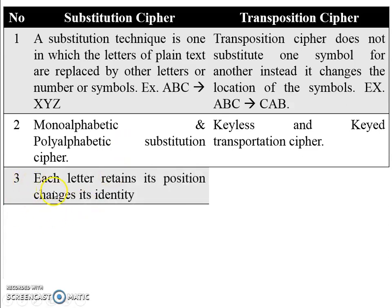In substitution cipher, each letter retains its position but changes its identity. In this example, the position of A remains as it is, but A is replaced by X. The position of B remains as it is, replaced by Y, and C's position remains as it is but is replaced by Z.